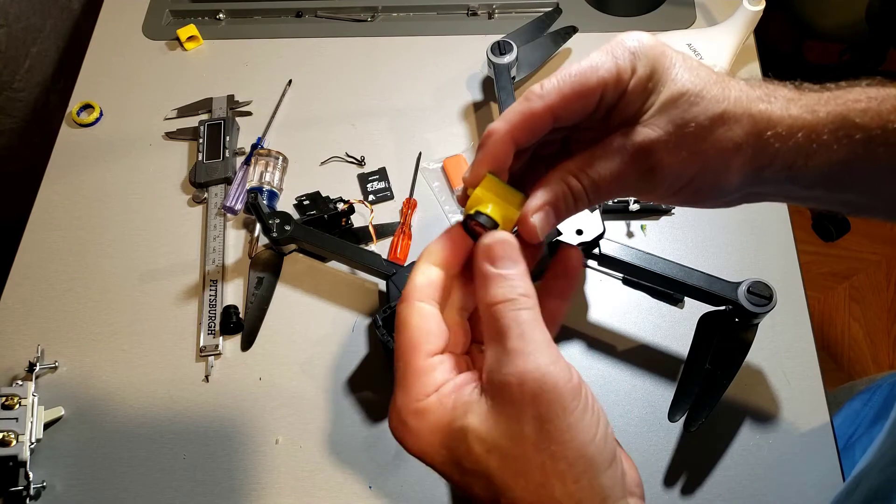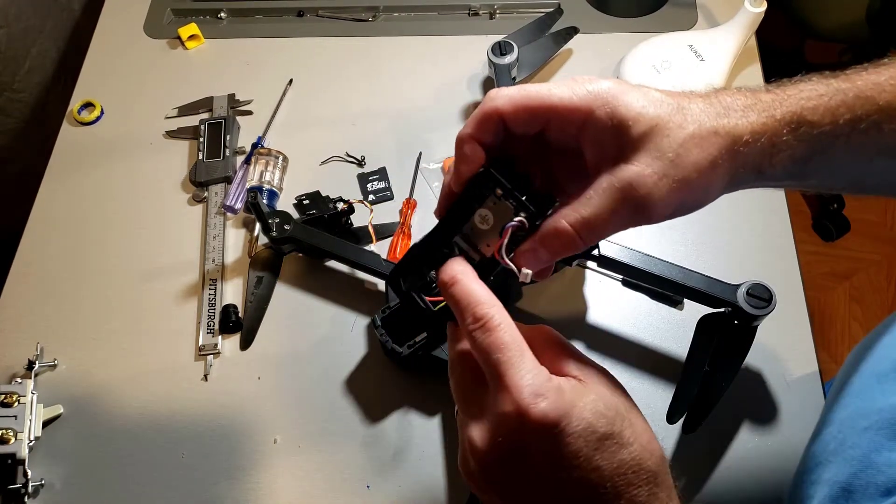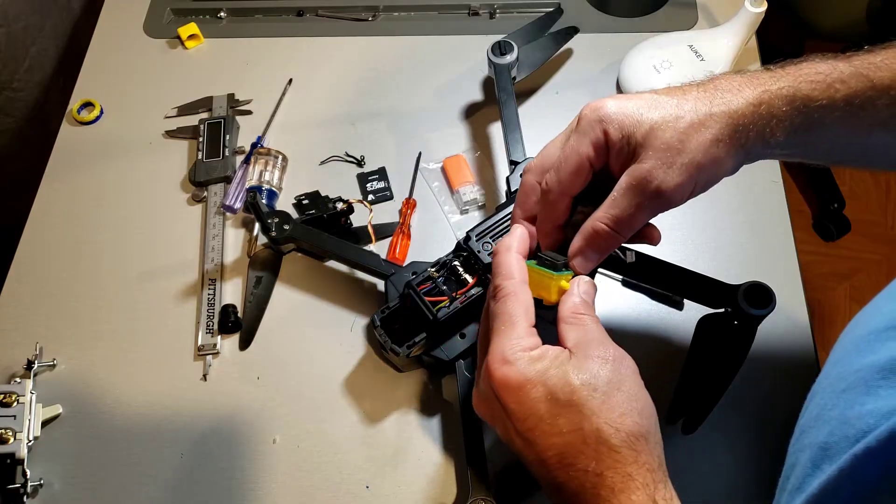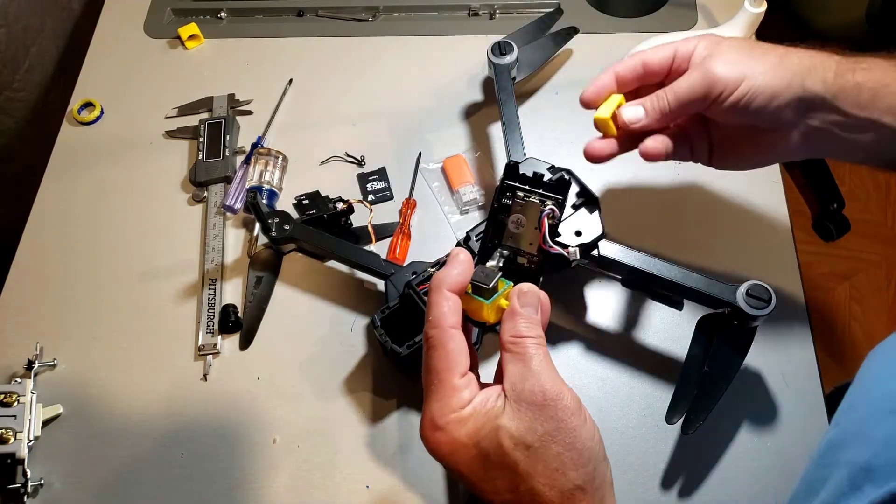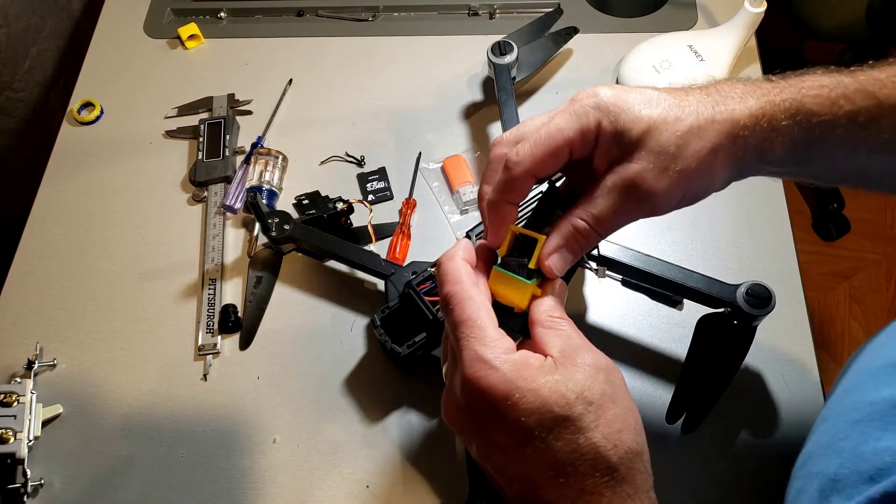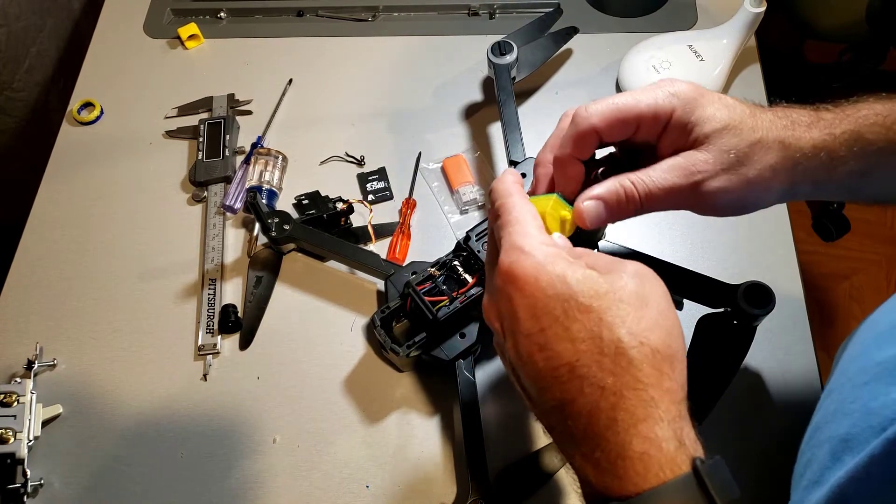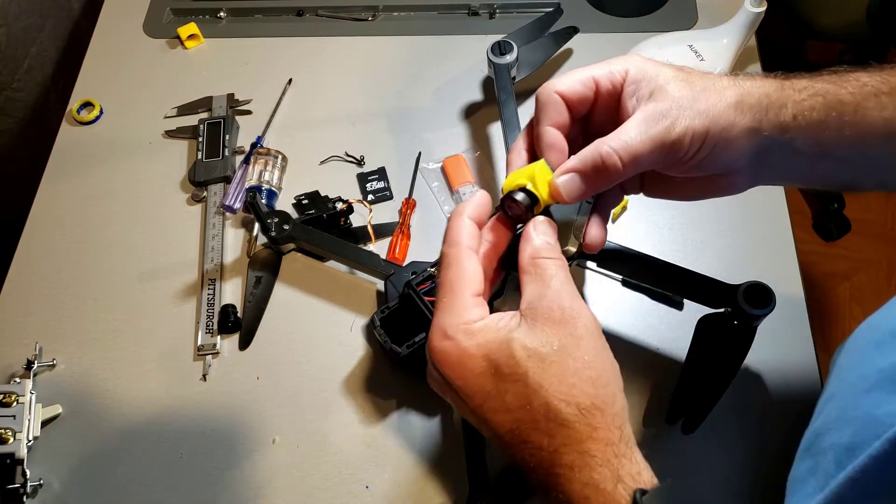Now remember we're being super careful with this little camera wire. When we attach it we need it to not be able to move, so I 3D printed this little bracket that goes around it and holds it in place. So first I'm going to push it in quite a ways and get this started.